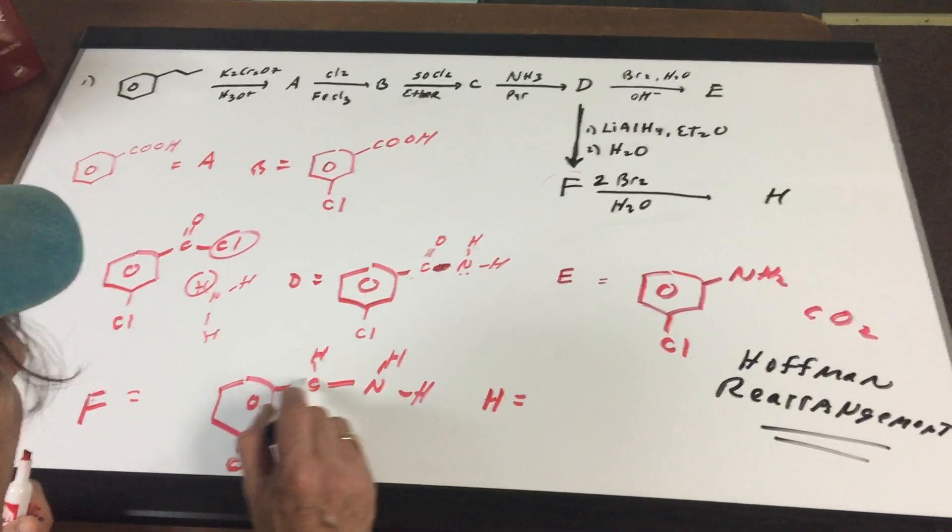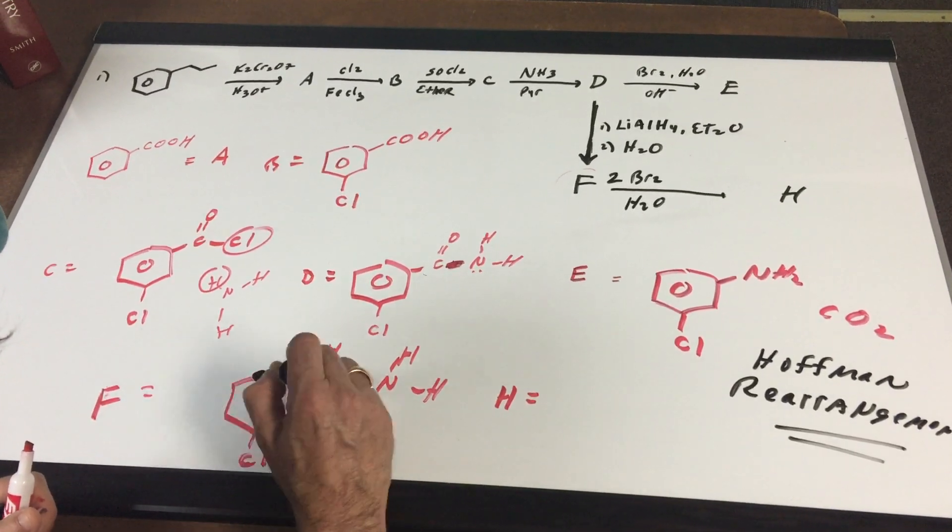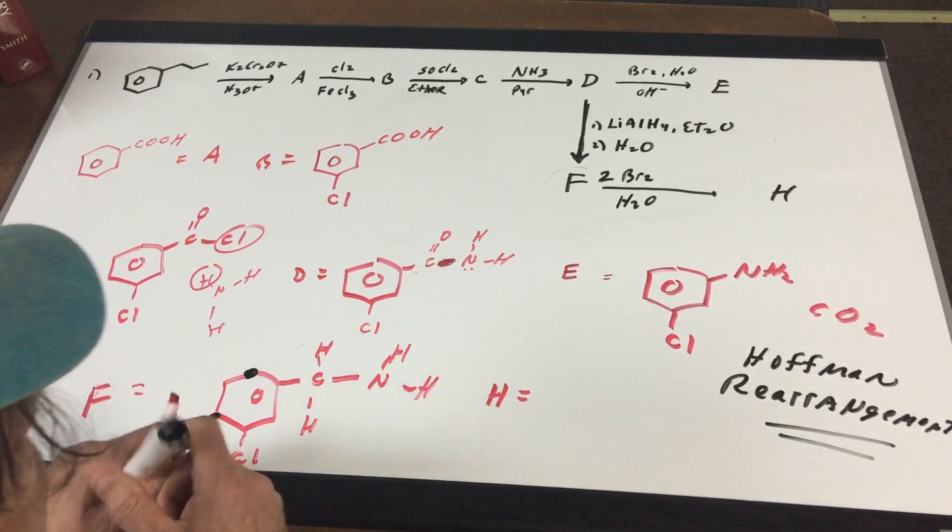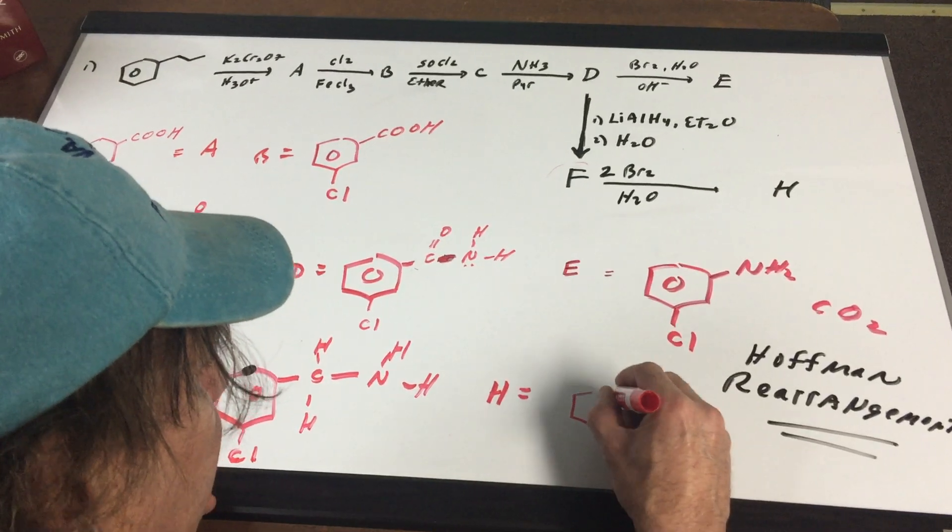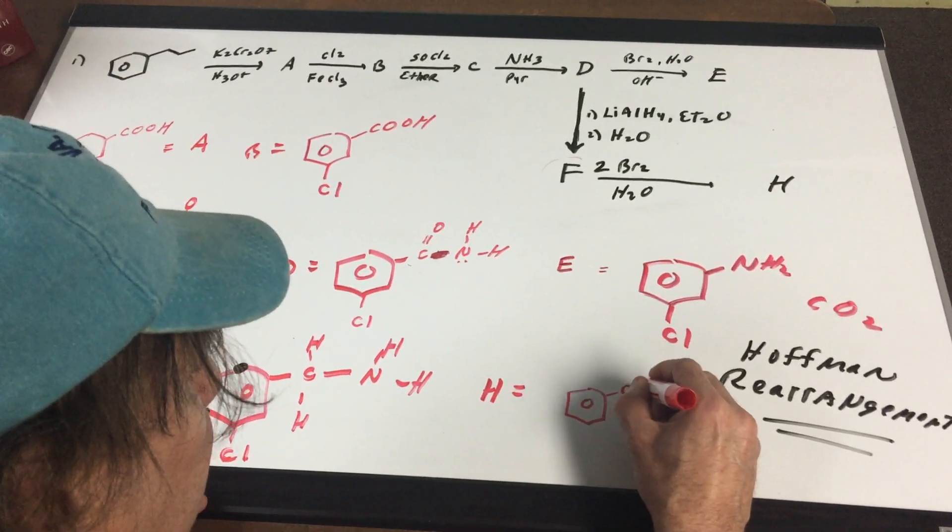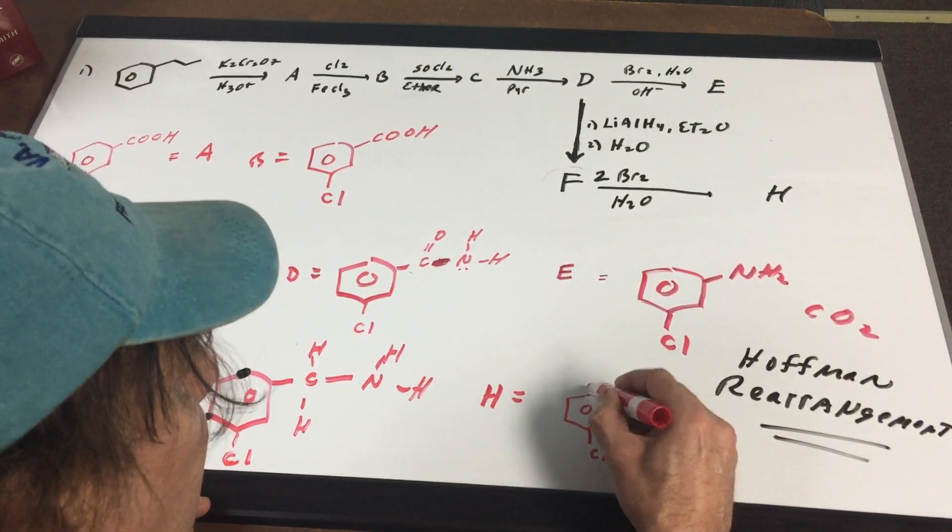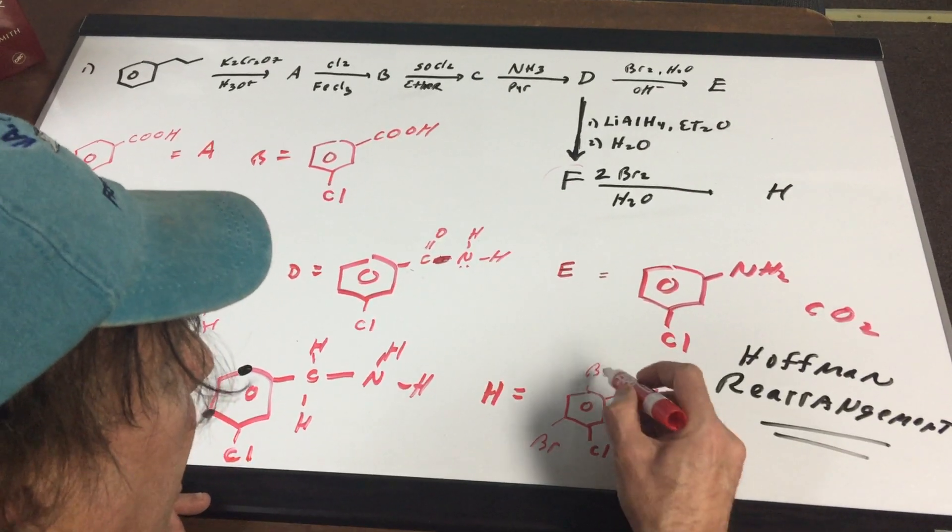This is going to be the more activating group. So I'm going to direct one bromine here and ortho to this group and the other group would be para. So that would result in this molecule here. You would have the CH2, NH2. There's the Cl. You would get a bromine here and you would get a bromine here.